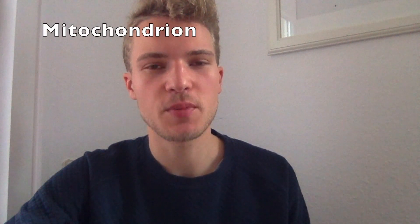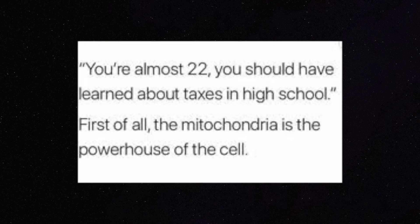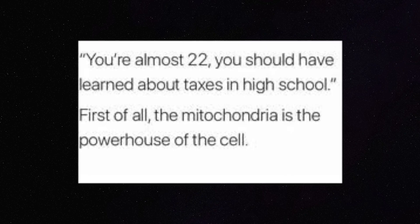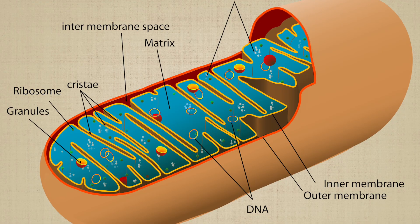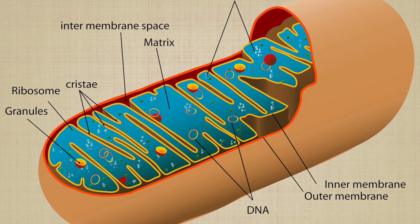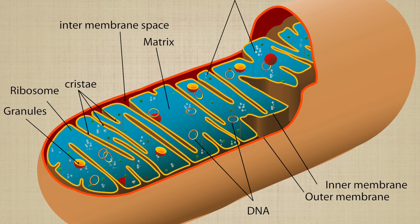Another organelle you've probably heard of in a previous biology class is the mitochondrion. People usually say the mitochondrion is the powerhouse of the cell — and that's essentially true, though for IB biology we'll be a bit more specific. The mitochondrion is also one of those organelles with a double membrane structure.